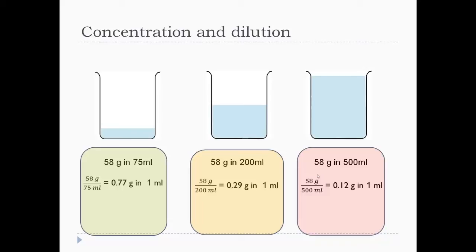The first beaker has 58 grams in 75 millilitres. If you do 58 grams divided by 75 millilitres, you get 0.77 grams per millilitre. For the other two beakers, dividing the amount in grams by the volume in millilitres gives you the amount per millilitre. The beaker on the left is the most concentrated at 0.77 grams per millilitre, and the beaker on the right is the most dilute at only 0.12 grams per millilitre.